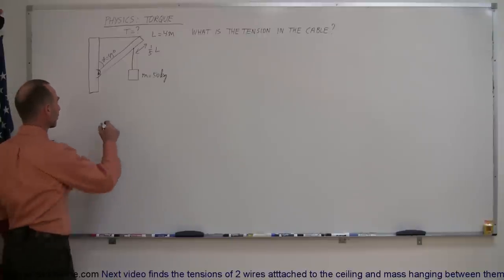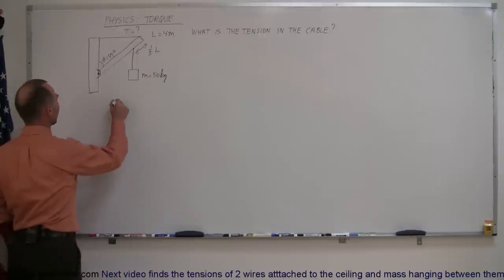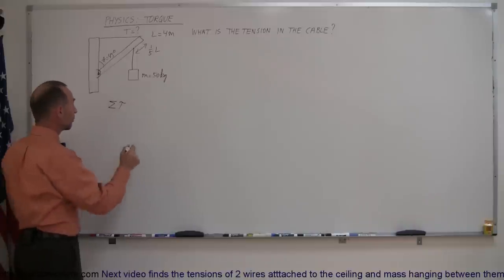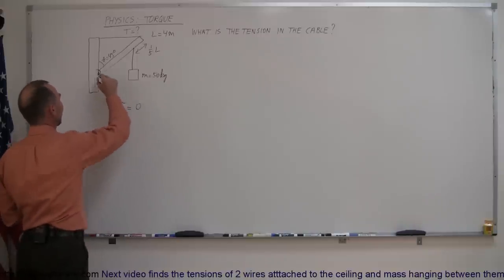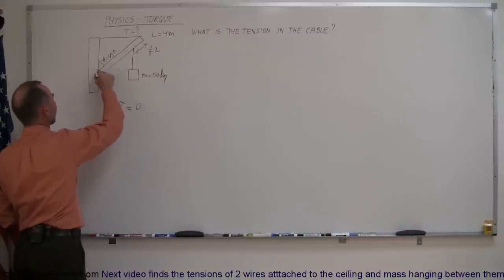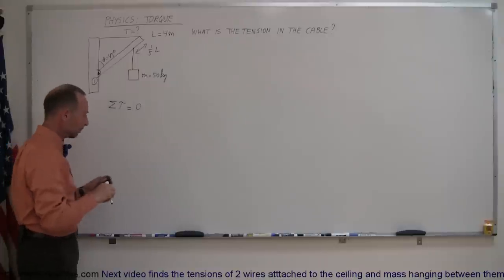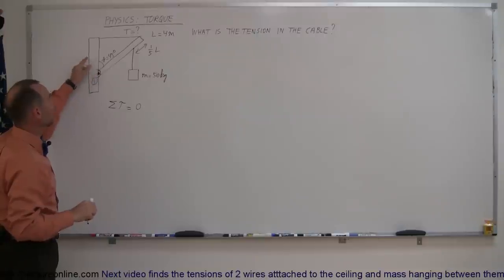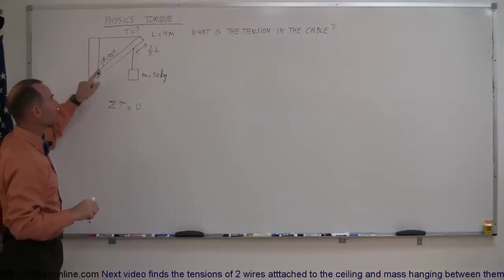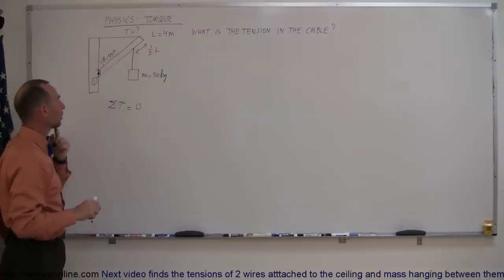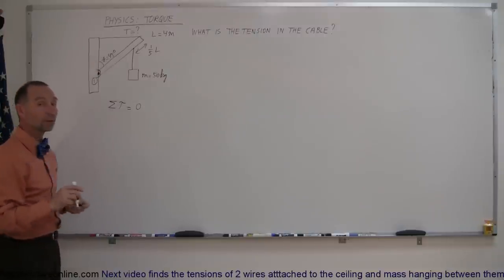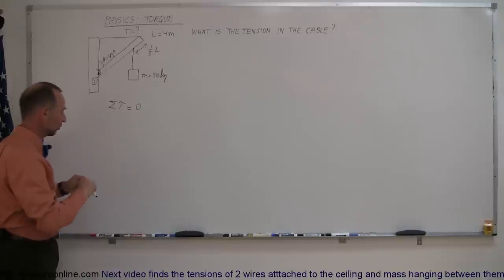The concept we're going to use here is that the sum of all the torques about a chosen pivot point must add up to zero. I'm going to pick this pivot point right here to start off the problem. We're going to pivot everything about this point and identify all the forces acting on this problem and what the corresponding torques are of each of those forces.